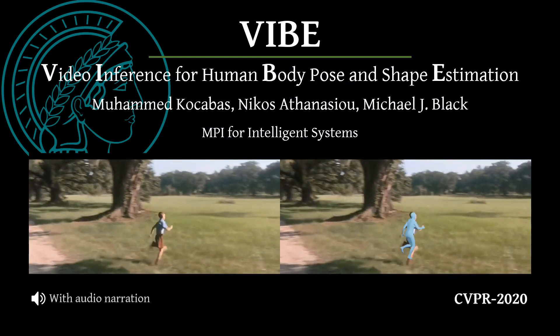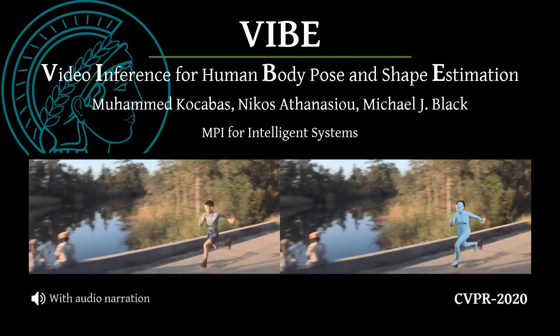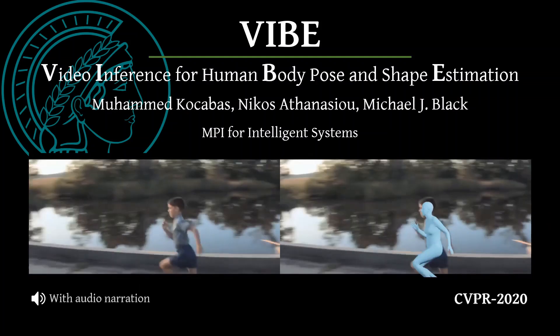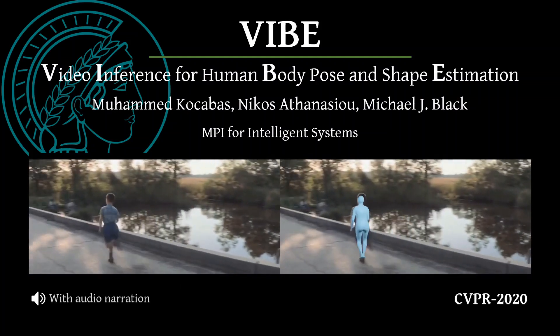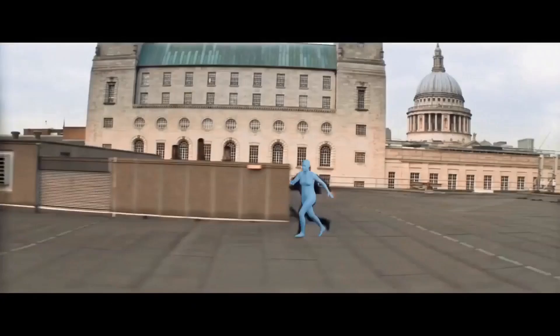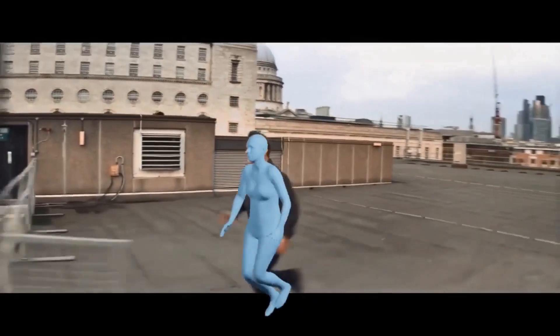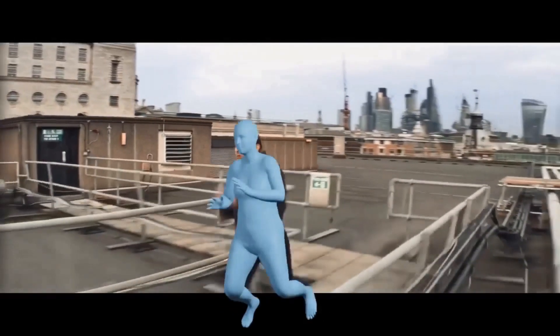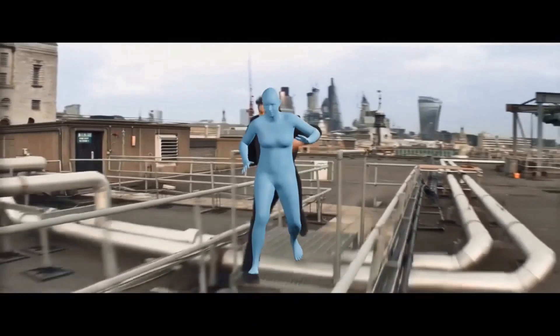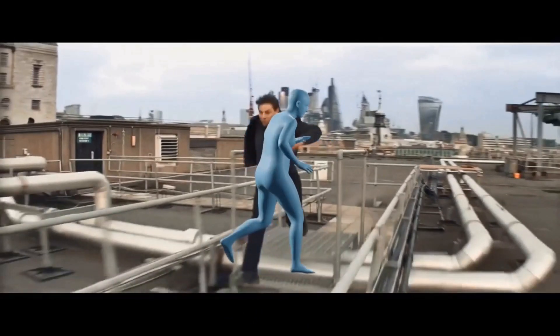We introduce VIBE: Video Inference for Human Body Pose and Shape Estimation. Given a video sequence of someone moving, our goal is to estimate the 3D pose and shape of the person.